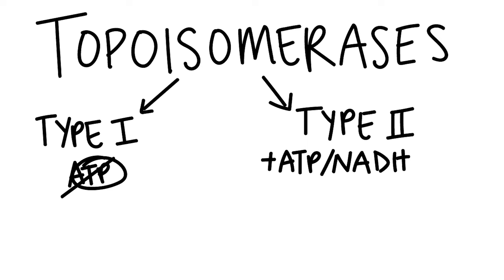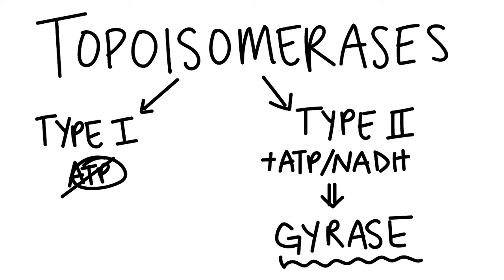Bacteria also have a special form of type 2 topoisomerases called gyrase. Gyrase enzymes use energy to negatively supercoil DNA, rather than restoring DNA to the relaxed state. Certain thermophiles also have topoisomerases that use energy to positively supercoil DNA, rather than restoring DNA to the relaxed state. Because it acts oppositely to gyrase, these enzymes are called reverse gyrase.